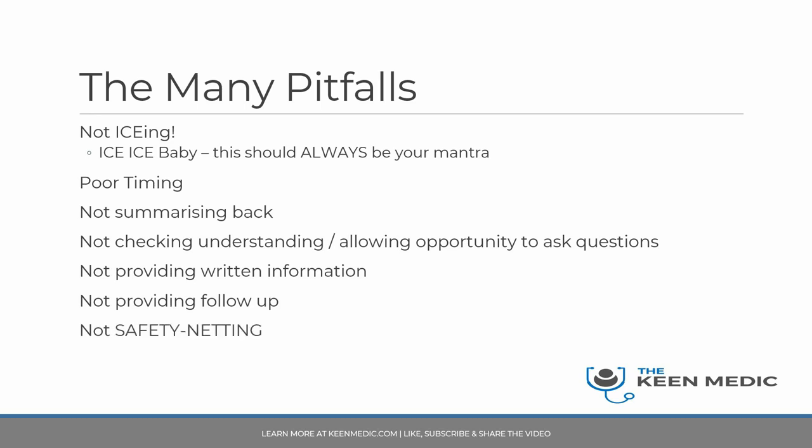Lastly, but definitely not the least, is safety netting. If a patient has got some kind of complaint and there's a chance it could get worse, you need to think about safety netting — providing them with information about the symptoms to look out for and to seek medical attention appropriately. For example, if a patient has had a head injury, is neurologically fine, and you're going to discharge them — if the following day they start vomiting violently and becoming drowsy, you need to make sure they seek urgent medical advice. That's what safety netting is: making sure medical attention is sought appropriately should their symptoms worsen.